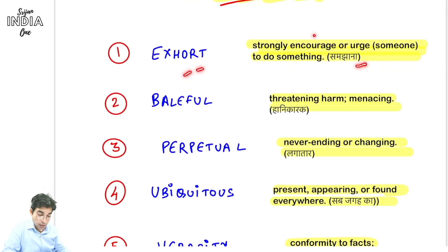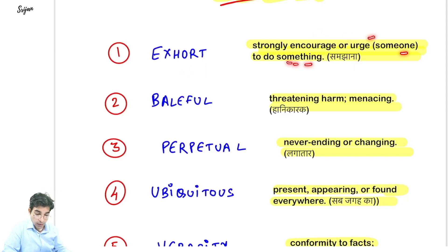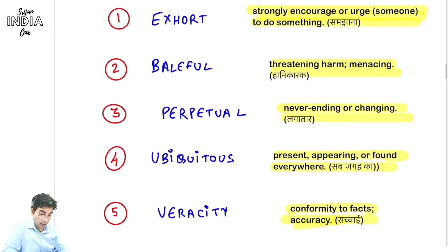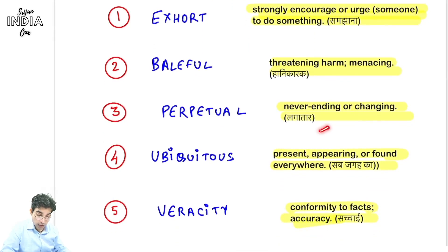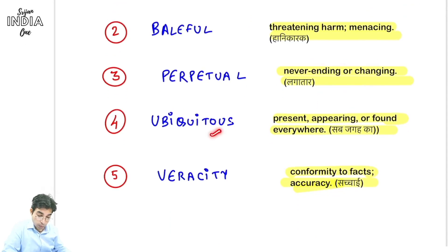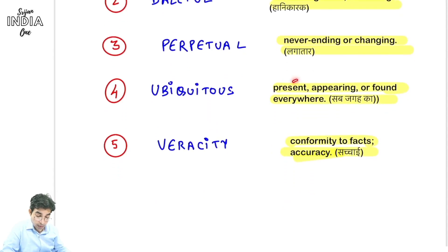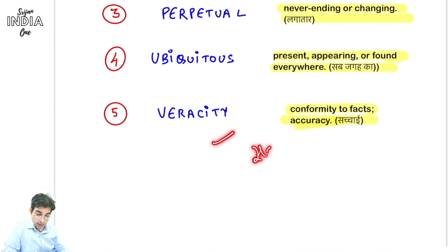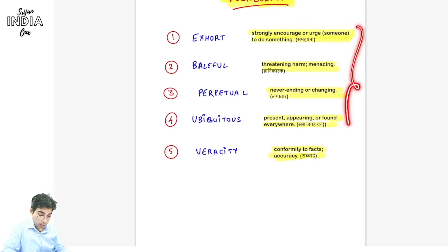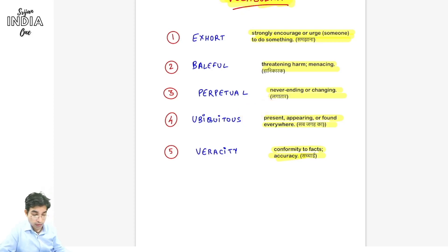Aaj ki vocabulary hai: exhort - matlab samjhana, strongly encourage or urge someone to do something. Baleful - haani karak, threatening, menacing. Perpetual - lagatar, never ending or changing, jaise perpetual engines hota hai. Ubiquitous - matlab wo sab jagah hai, present or found everywhere. Veracity - matlab hota hai sachchai, conformity to facts or accuracy.